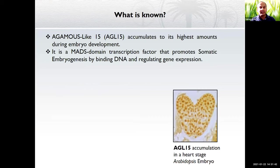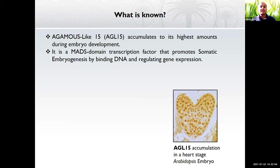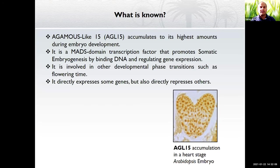A prominent and well-studied transcription factor, AGL15, has been shown to accumulate highest in the heart-stage embryo. Here is an image of the heart-stage embryo of Arabidopsis — the yellow color shows where AGL15 is present. Transcription factors are proteins that bind to DNA and regulate gene expression. AGL15 belongs to the MADS domain transcription factor family and is also involved in other developmental phases like flowering, expressing and repressing some genes.